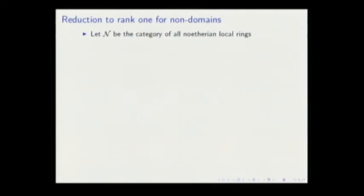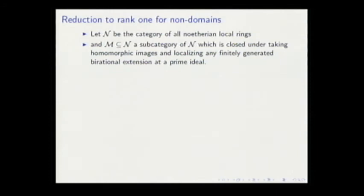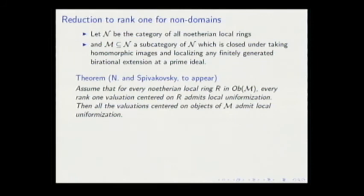That's what we want to do. Again, we want to prove the equivalent result as before. We have the category of all Noetherian local rings now, and a subcategory with such properties. We can prove again that if every rank one valuation centered at these objects admits local uniformization, then all valuations admit local uniformization.